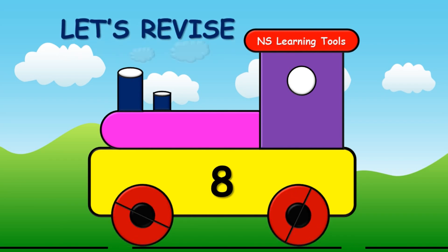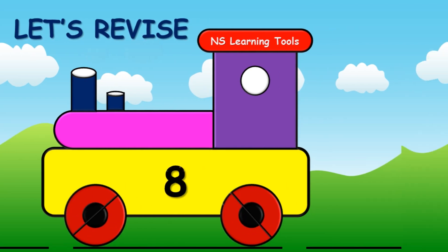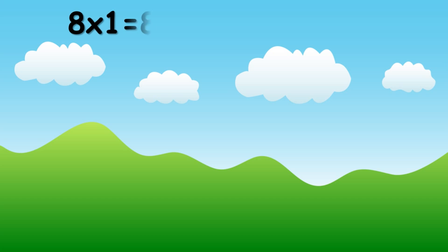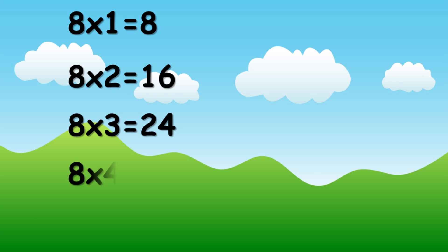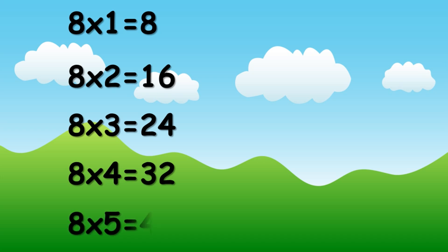Let's revise. Eight ones are eight. Eight twos are sixteen. Eight threes are twenty-four. Eight fours are thirty-two. Eight fives are forty.